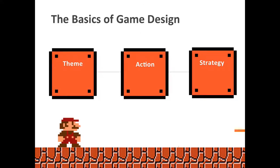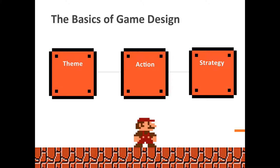One of the things we can do to make games more dynamic is think about three basic elements that you can apply to almost any game to get new and novel design out of it. Those three things are theme, action, and strategy.